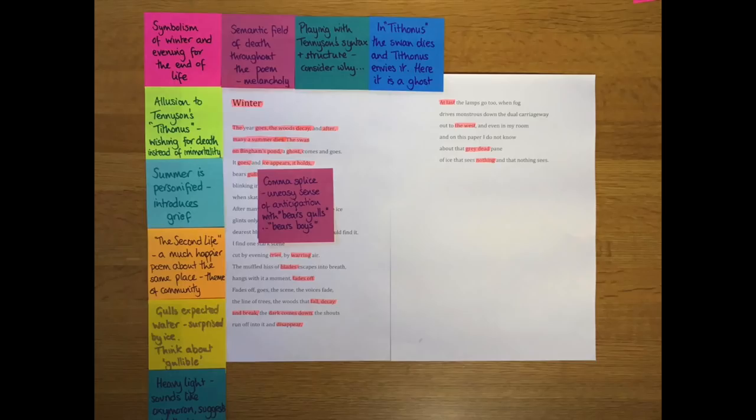We've got a comma splice here as well in this sentence. The comma splice feels uneasy. It gives us a sense of anticipation. When you get a comma splice, you're expecting it holds, and then it does something else. It bears gulls, it bears boys. You're waiting for something, and I guess what you're waiting for is actually for the ice not to bear them, for it to break, and it doesn't, which is quite nice.